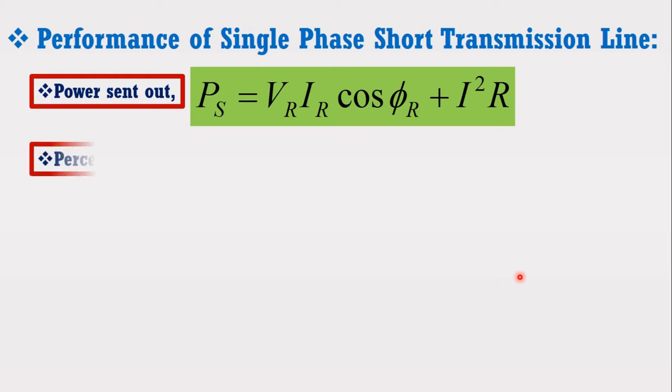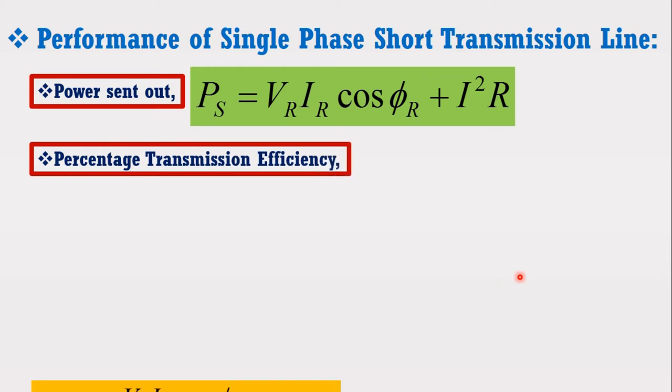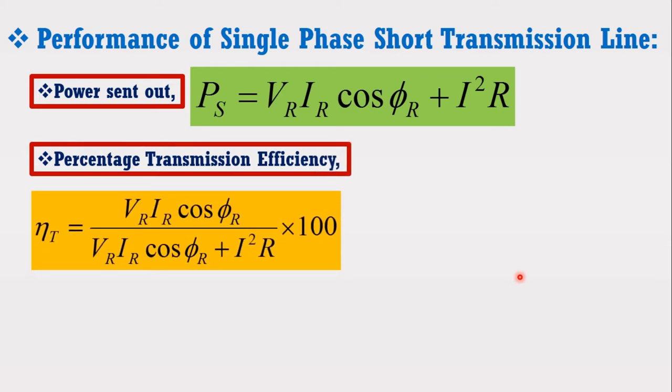The percentage transmission efficiency for short transmission line is given by the following expression. These are all the expressions that may be used to calculate the sending, receiving, voltage, power, voltage regulation, losses and efficiency of the short transmission line.